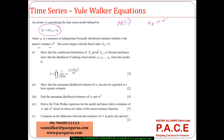ET is normally distributed with mean zero and variance sigma squared. The series begins with x0 equal to zero, which means x0 is a known value, so the probability of x0 is 1.